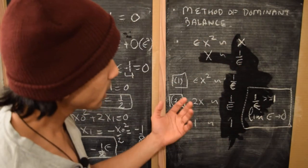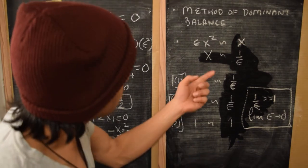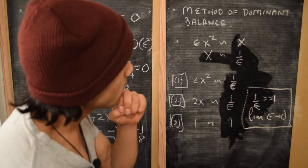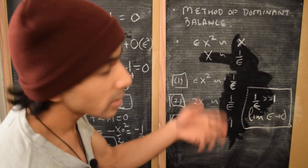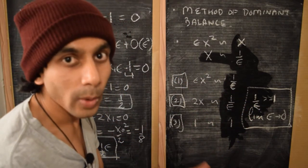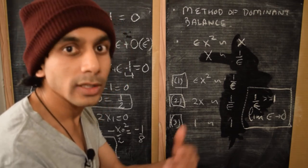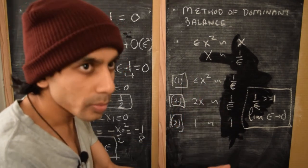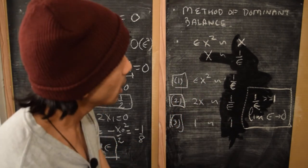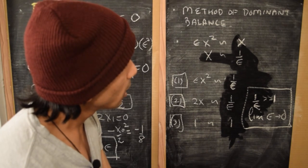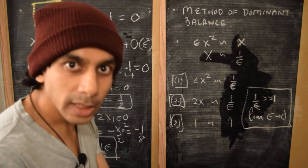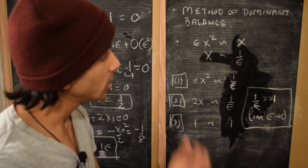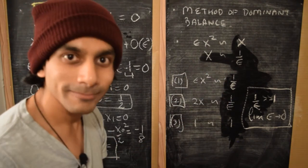This gives us our pair of dominant terms, and we now see that x should scale as 1 over epsilon. This suggests we must define a new variable y and recast the equation in terms of that new variable, converting into a problem we can then solve using regular perturbation methods. We'll do that in the next part of this video, where we'll solve for the complete equation using this scaling relation.